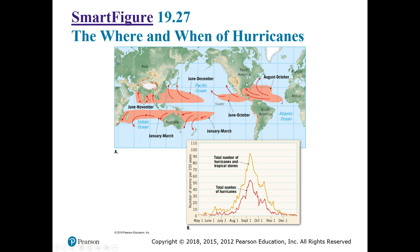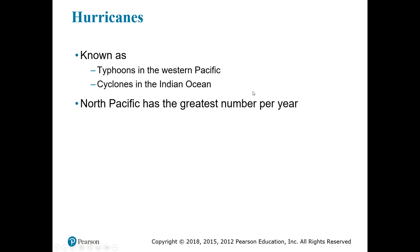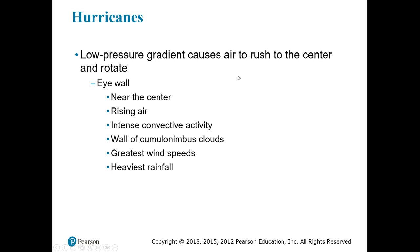Hurricanes typically follow a few different path possibilities — curving into the southern tip of Mexico, into the Gulf of Mexico hitting Texas, Louisiana, Mississippi, or the Florida Panhandle, or bending around to hit the east coast of the United States before moving into colder waters. Hurricanes have different names depending on ocean basin: they're called typhoons in the western Pacific and cyclones in the Indian Ocean, but they're all the same thing. The North Pacific has the greatest number of these events every year.